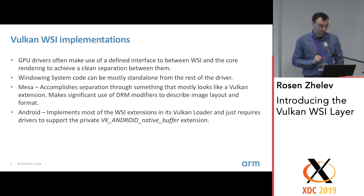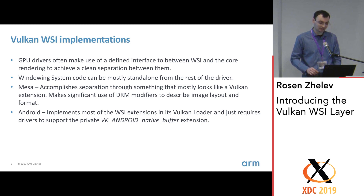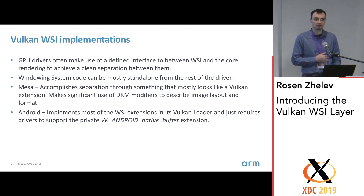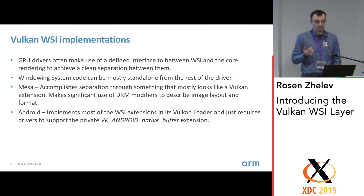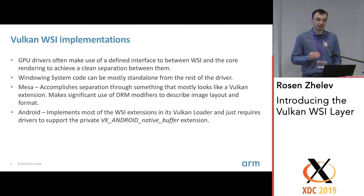How do Vulkan drivers currently implement the WSI extensions? It's mostly using a clean separation between the core driver and the WSI-specific code, which is the norm for most well-designed drivers. Different drivers use different interfaces, but Mesa uses something that looks like a Vulkan extension. It uses DRM modifiers quite extensively, which is a cool way to specify a format — it allows you, apart from specifying the DRM fourCC format for a buffer, to also specify the layout, supporting hardware-optimized layouts for both the GPU and the display controller. ARM uses it, for example, to specify its AFBC compression. It's mostly standalone for most drivers, but still part of the GPU driver itself.